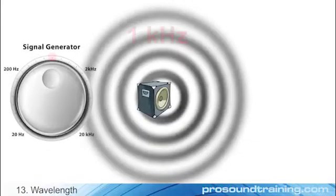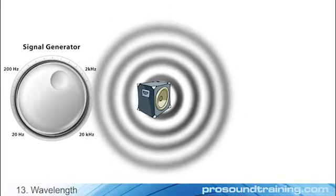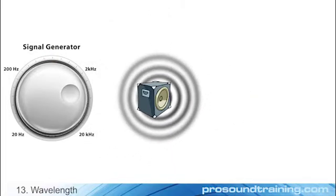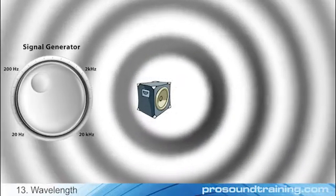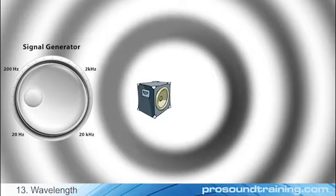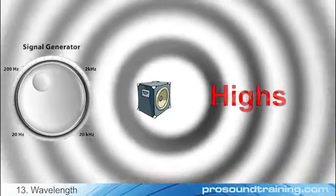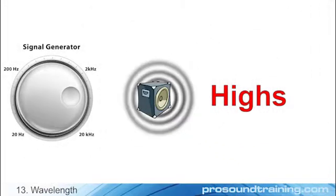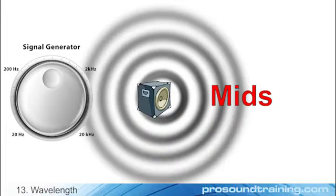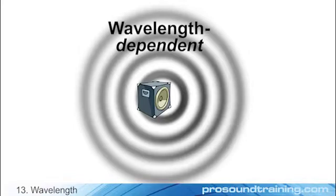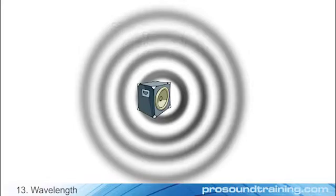The acoustic wavelength of one kilohertz is about one foot. I'll use this as a reference. Wavelengths get shorter with increasing frequency, halving for each octave. They get longer with decreasing frequency, doubling with each octave. As such, low-frequency wavelengths can get very long, and high-frequency wavelengths can get very short. Mid-frequency wavelengths are in between. The acoustic effects of rooms and objects is wavelength-dependent, which is another way of saying they are frequency-dependent.